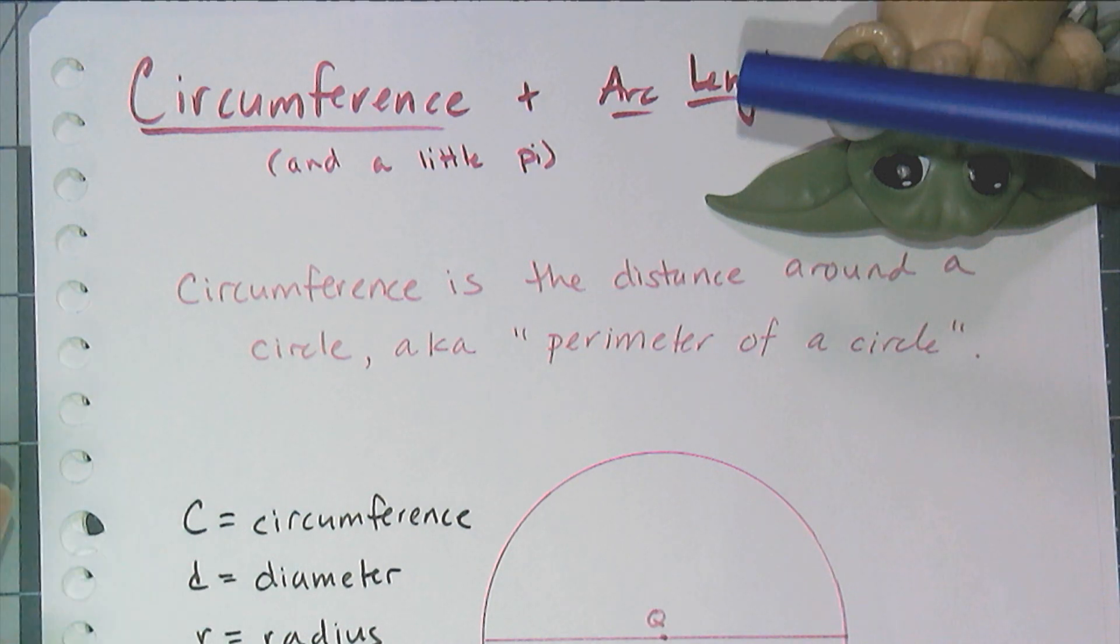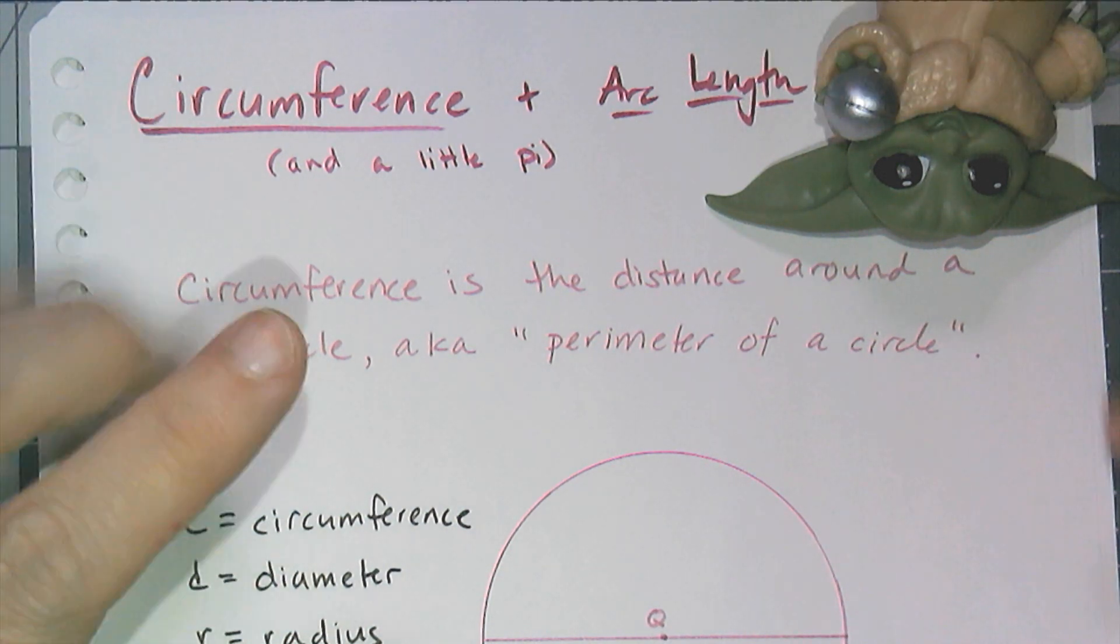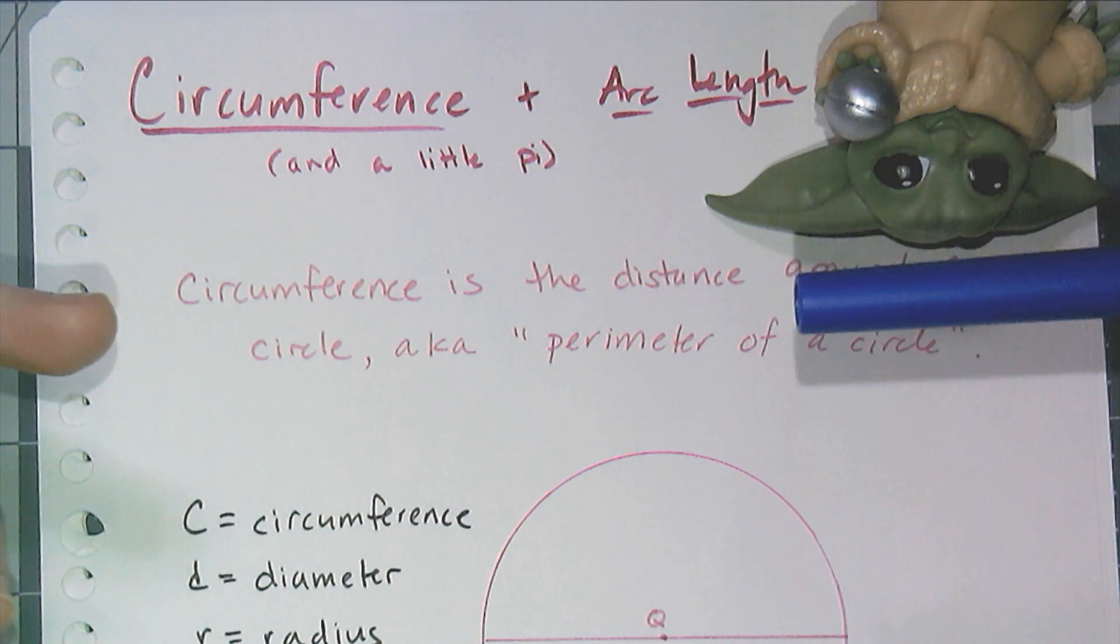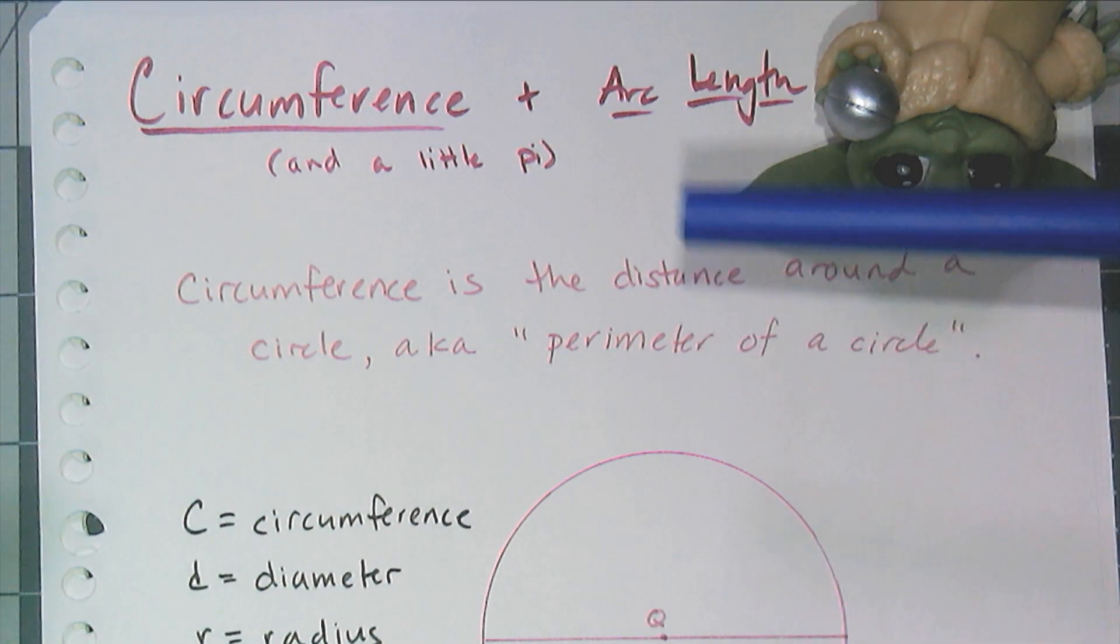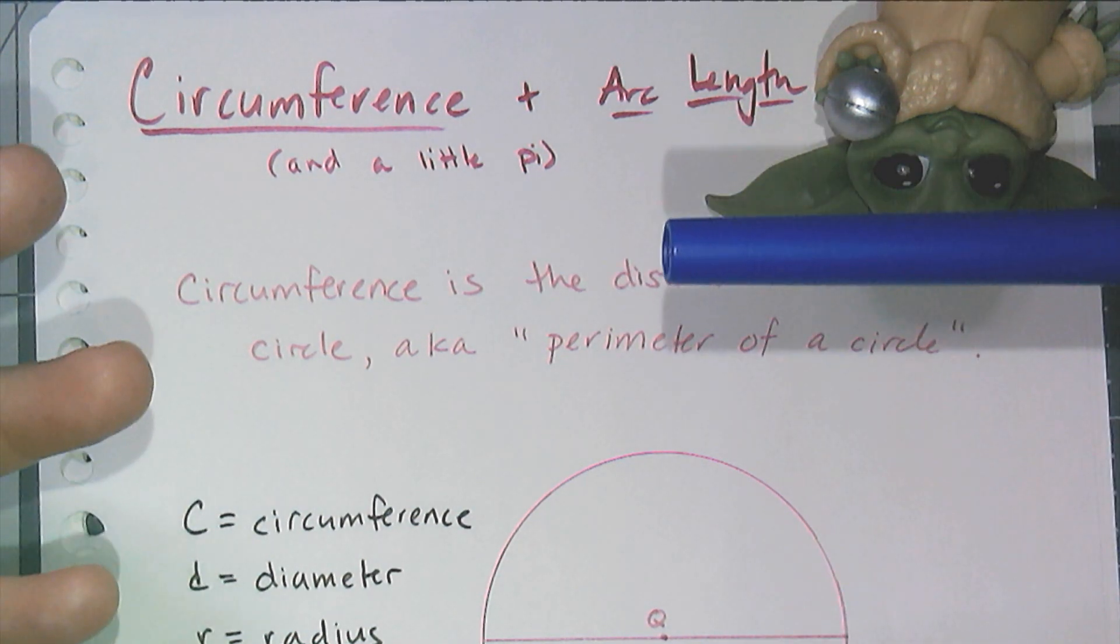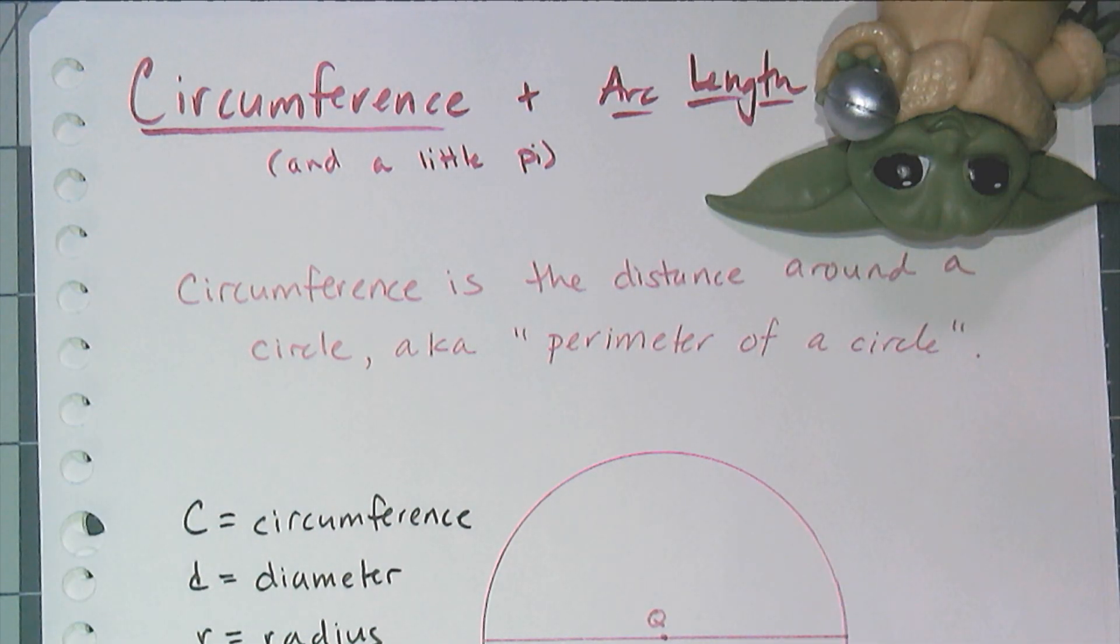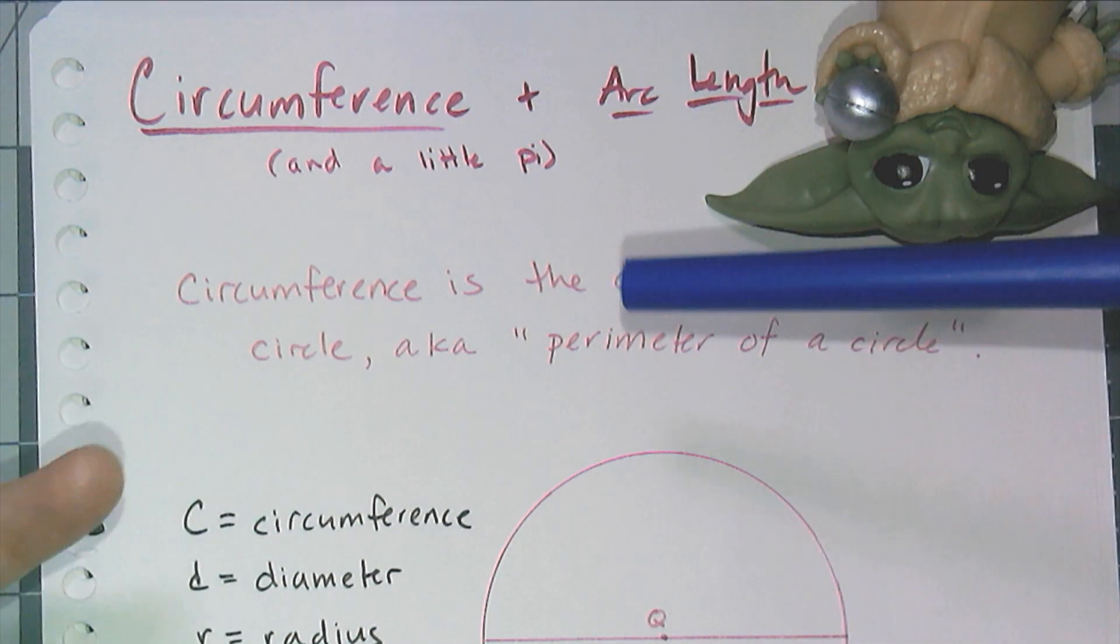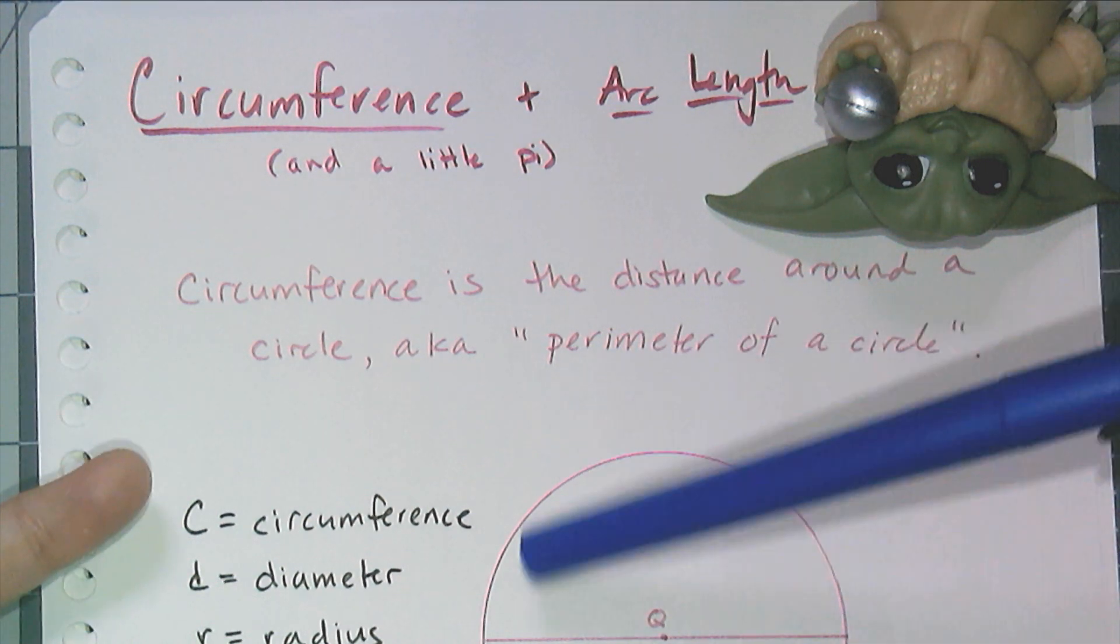Hey y'all, in this video we're going to talk about circumference and arc length, and I'm going to throw in a little bit about pi. Now the key concept for this video is going to be circumference. When I ask people what they know about circumference, most people throw out a formula like circumference is 2πr or dπ.